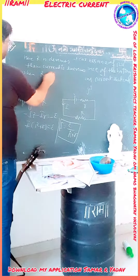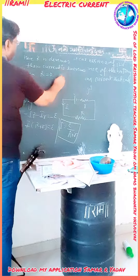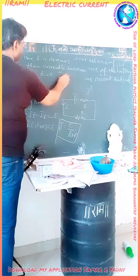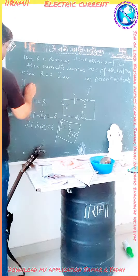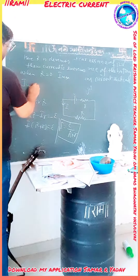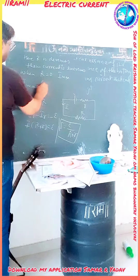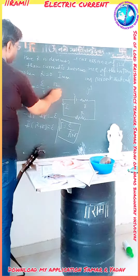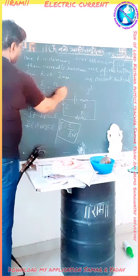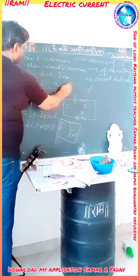When capital R is equal to 0, then the current will be maximum. So we can write here I max is equal to E upon r, which equals 12 upon 0.4, and solving this gives 30 amperes.